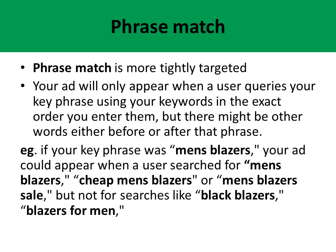You can see in this example, if a key phrase was Men's Blazers, your ad could appear when a user searches for Men's Blazers, or Cheap Men's Blazers, or Men's Blazers Sale. But not for searches like Black Blazers or Blazers for Men. For the search Blazers for Men, the word 'for' comes in between, so even when a word comes in the middle of them, it doesn't get included in the phrase match type.